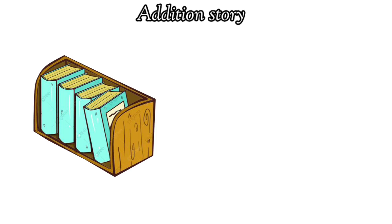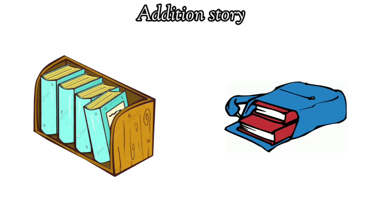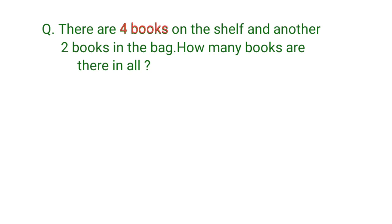Let us try to solve one last addition story. There are four books on the shelf and another two books in the back. How many books are there in all? The information we have: four books on the shelf and another two books in the back. We have to find out how many books there are in all. 'In all' means we have to do addition.